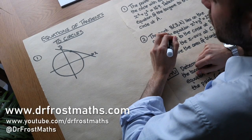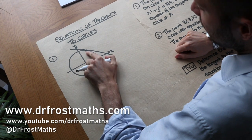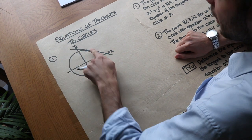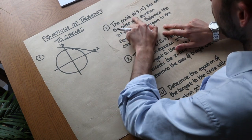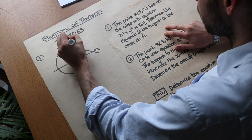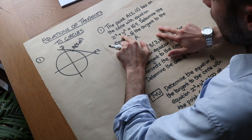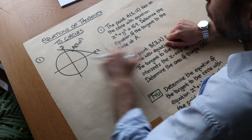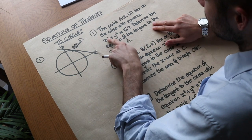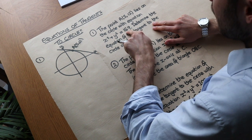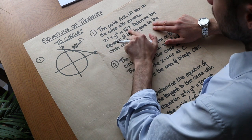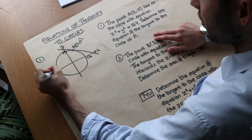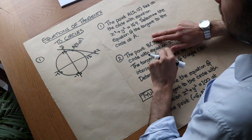Welcome to this video on finding the equations of tangents to circles. If you have a circle and a specified point, we want to find the equation of the tangent to this circle. Remember that a tangent is a straight line that touches the circle. For example, x squared plus y squared equals 169 — if you square root 169, the radius is 13 and the circle is centered at the origin.